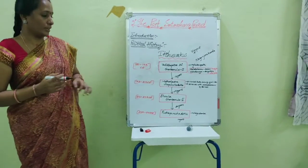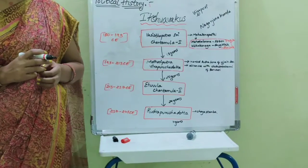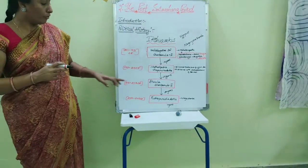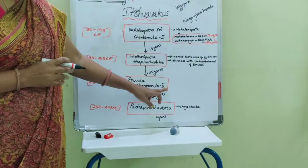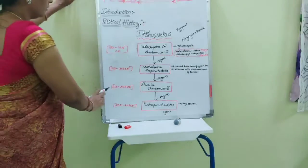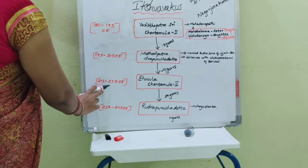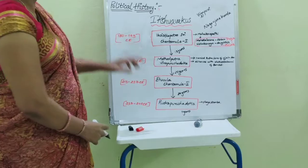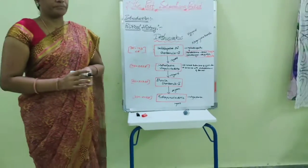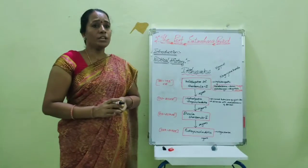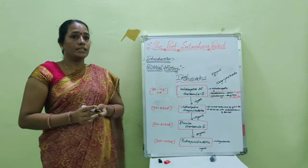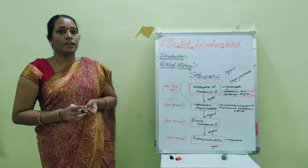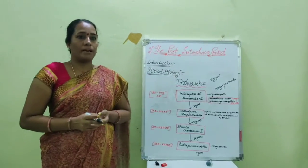Veera Purushadatta was succeeded by his son Ehuvala Shantamula II, period 232-237, around 24 years. Ehuvala Shantamula II is also a great king and renowned by Pallava inscriptions.